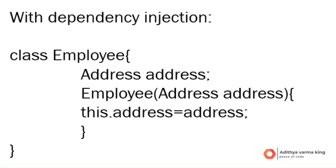This means the Employee class does not create an instance of Address directly, but relies on an instance being provided during construction — this is decoupling of concerns. Since the Address dependency is injected, you can easily change or substitute different implementations of the Address class without modifying the Employee class. During unit testing, you can easily mock or substitute the Address dependency, allowing for isolated testing of the Employee class.